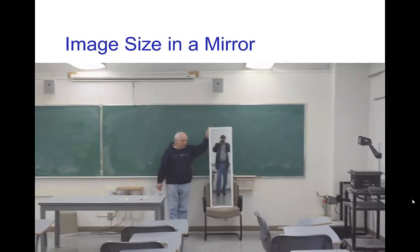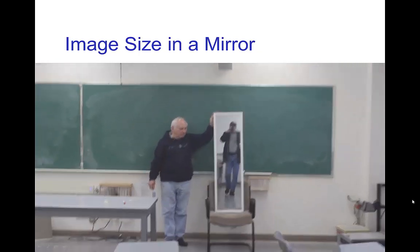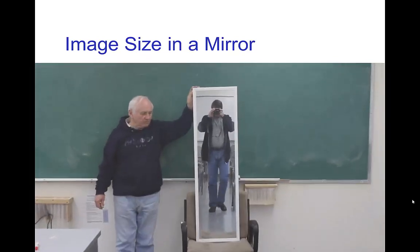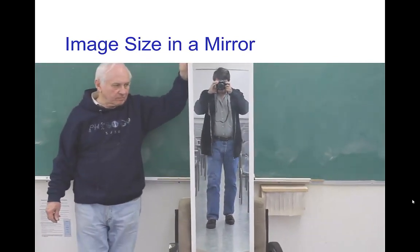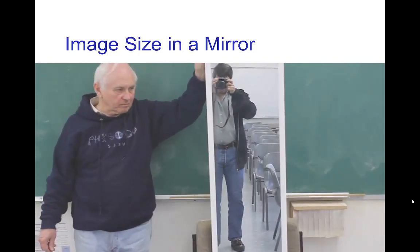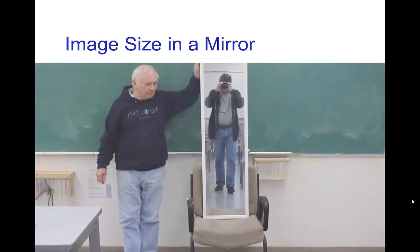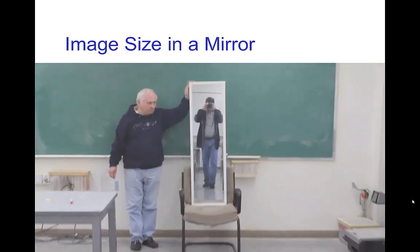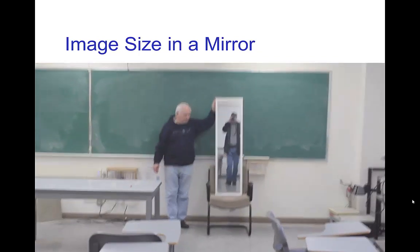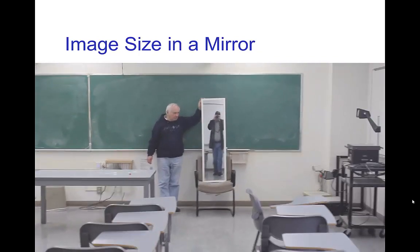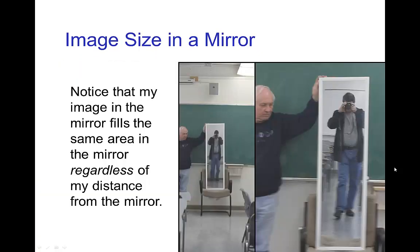So here I am walking towards a full length mirror and you notice that my image always fills the same portion of the mirror. I'm roughly filling about 80% of the mirror with what's called a full length mirror. And by the way, this mirror is only about four feet tall and yet it takes my entire image plus a couple of feet above and below. Here's some stills from that video and again notice that my image in the mirror fills the same area of the mirror regardless of my distance from the mirror. Again this is all predicted by ray tracing.